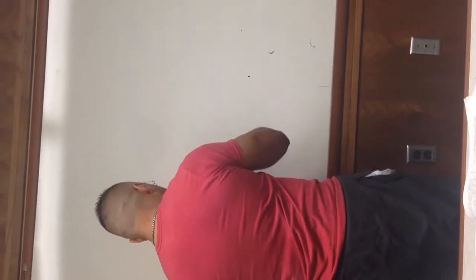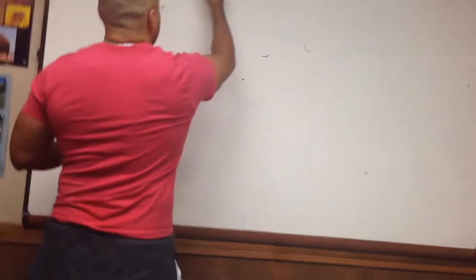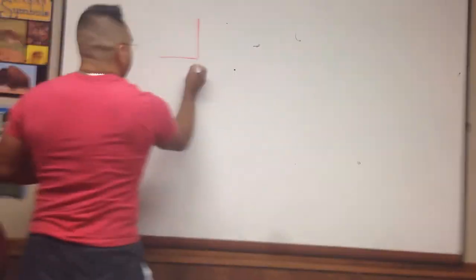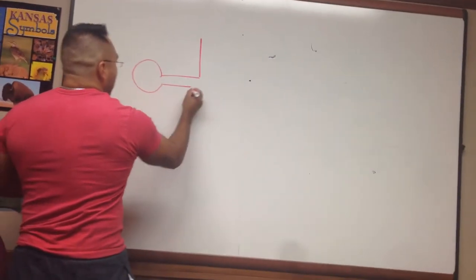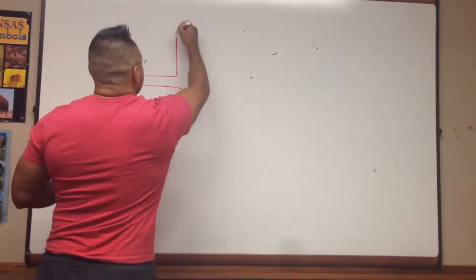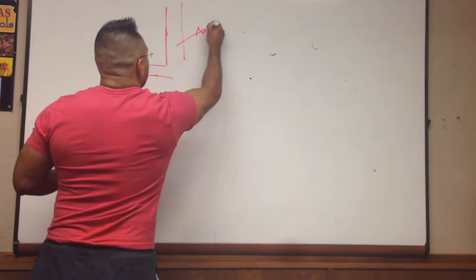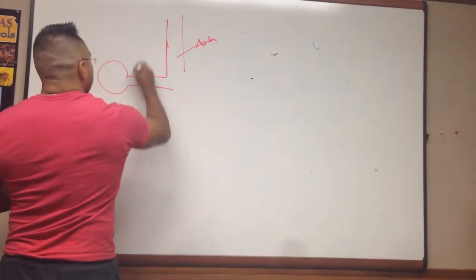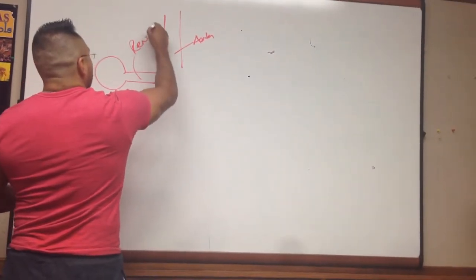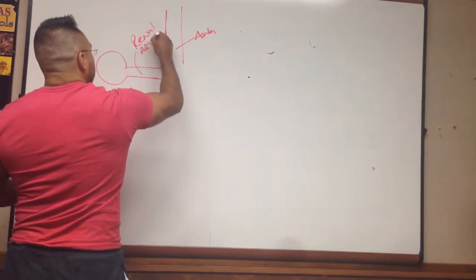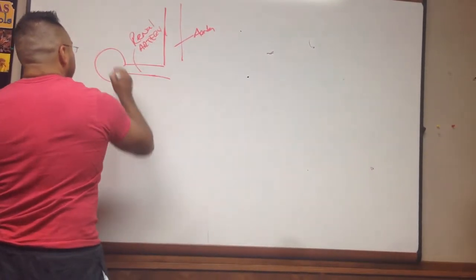So we're going to look at these real quick, real fast. Let's pretend this is the aorta. This would be a renal artery. This would be a kidney.